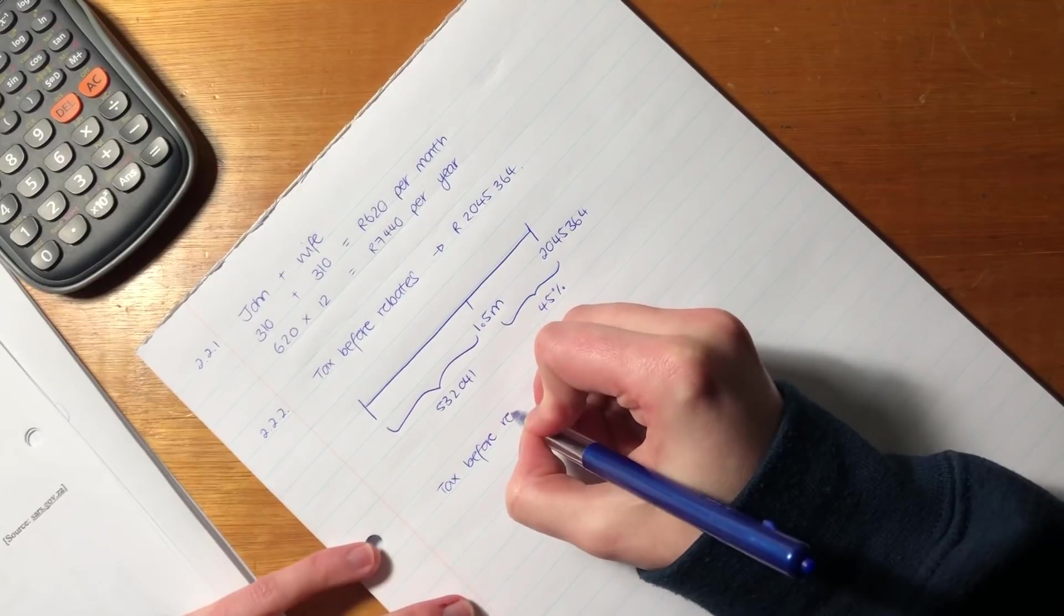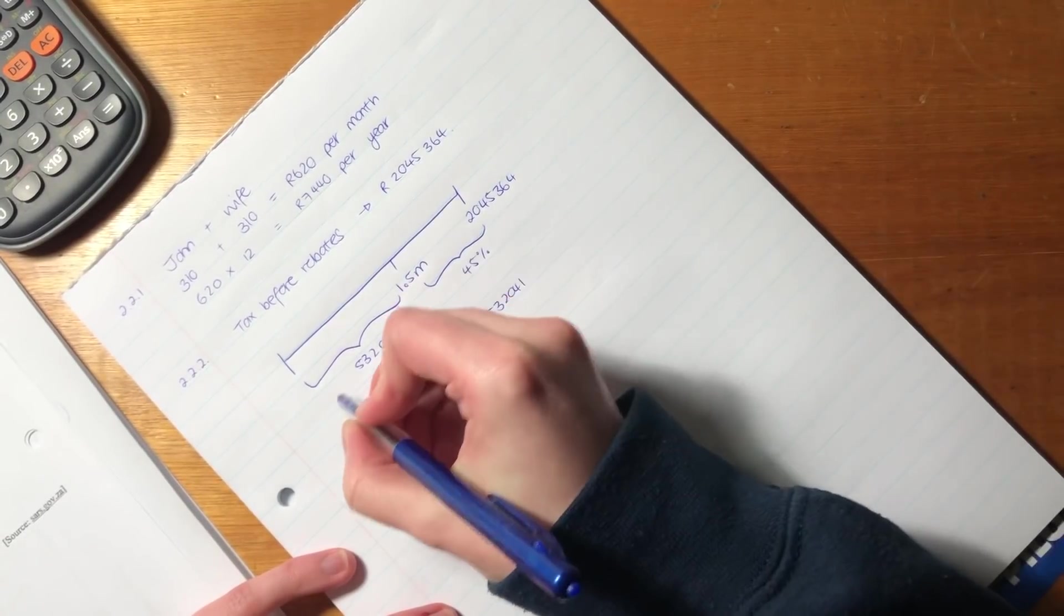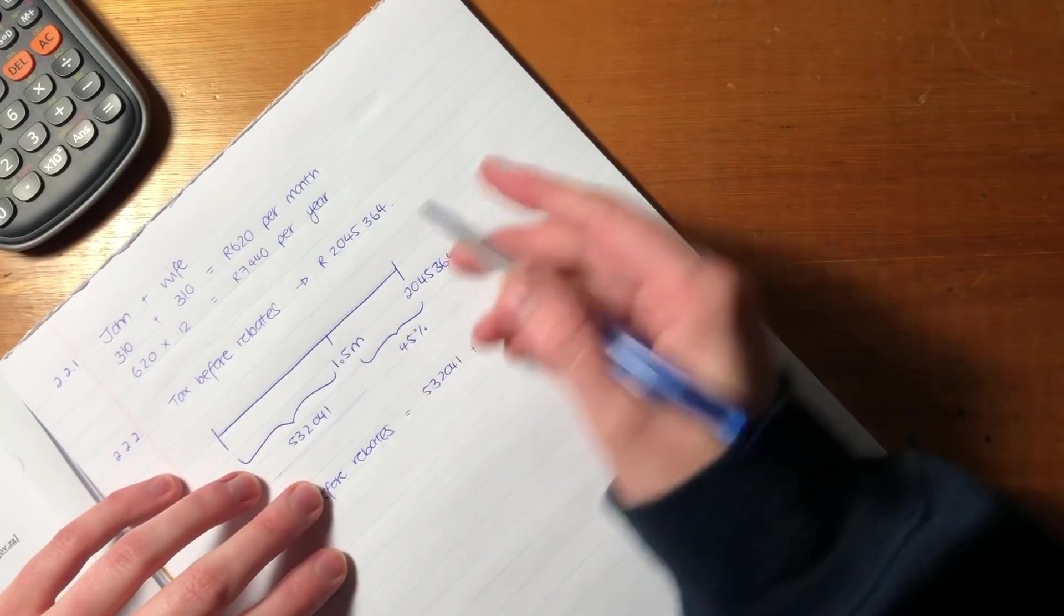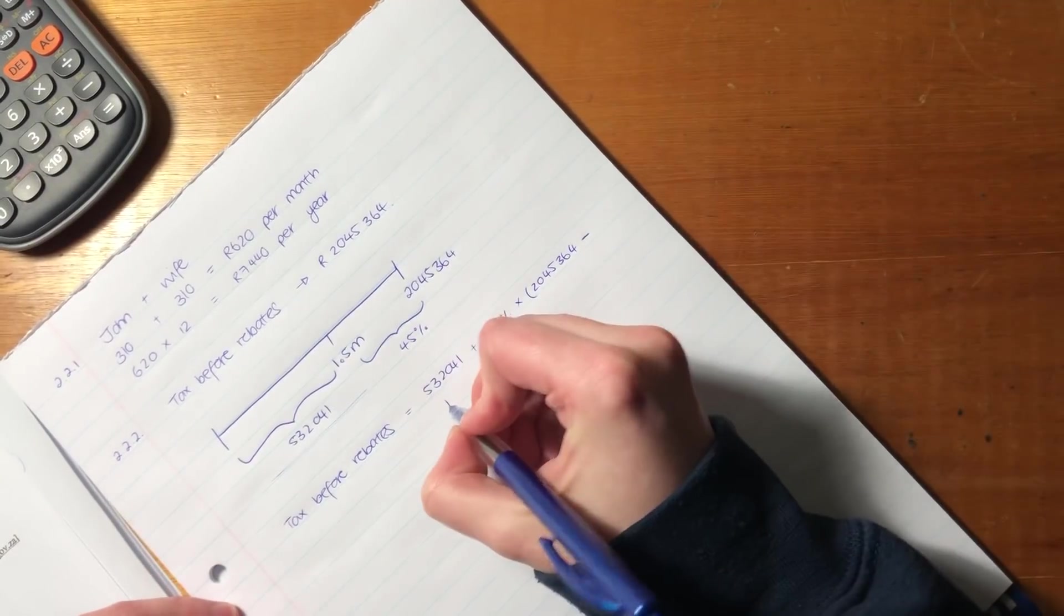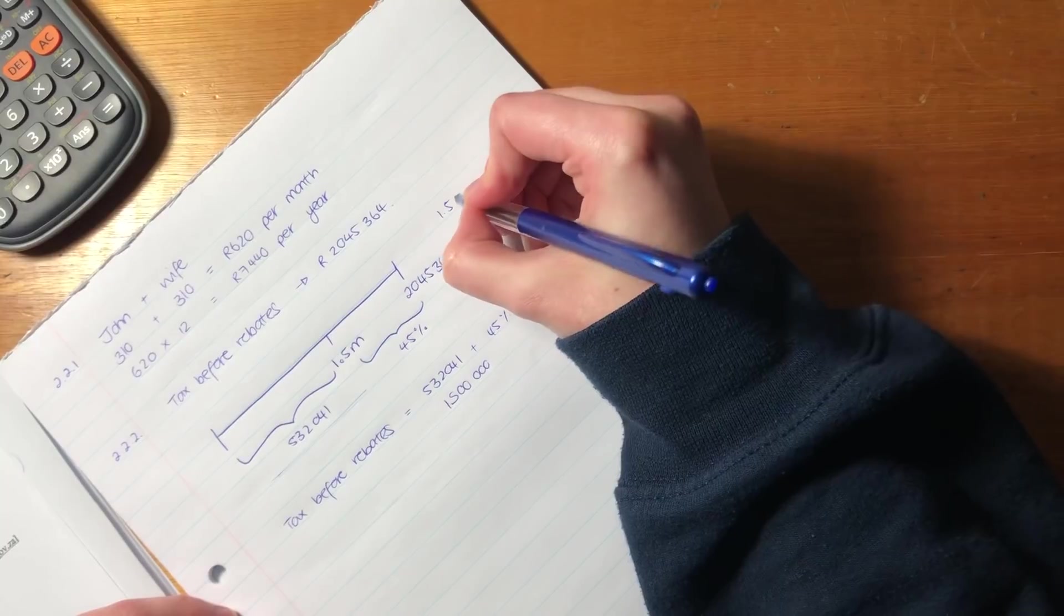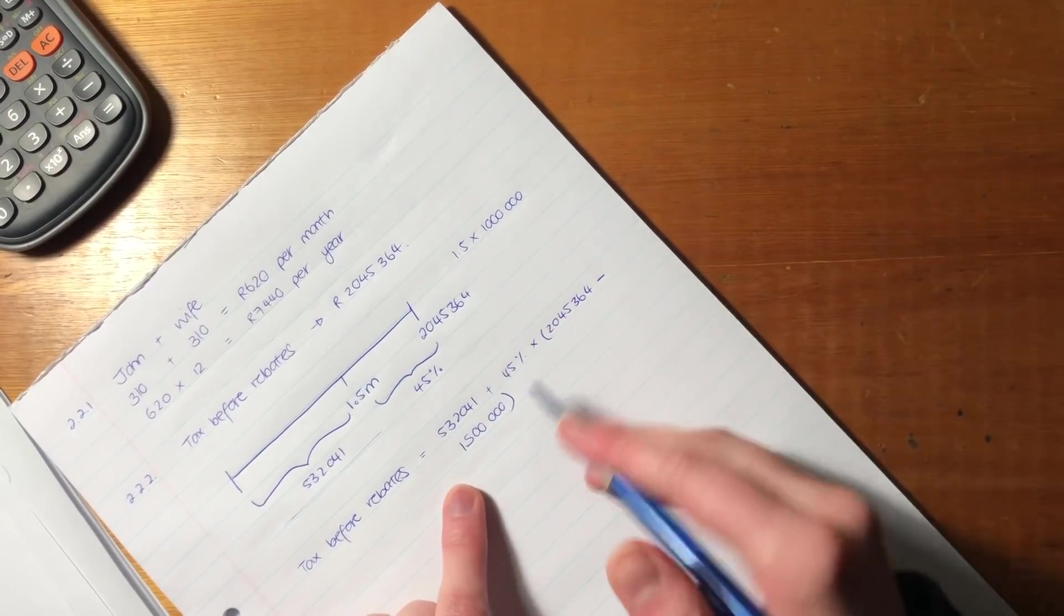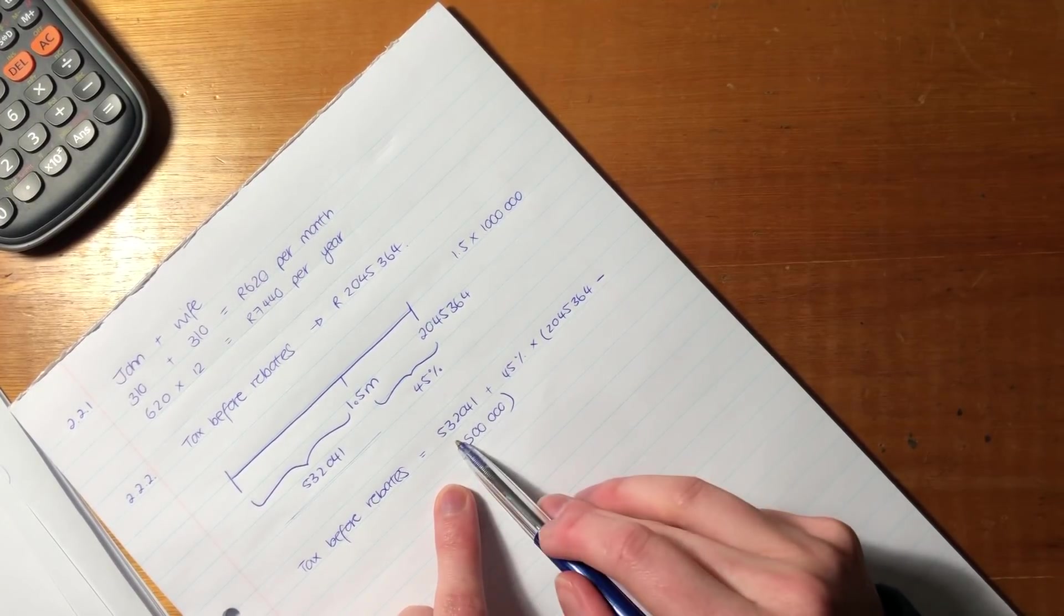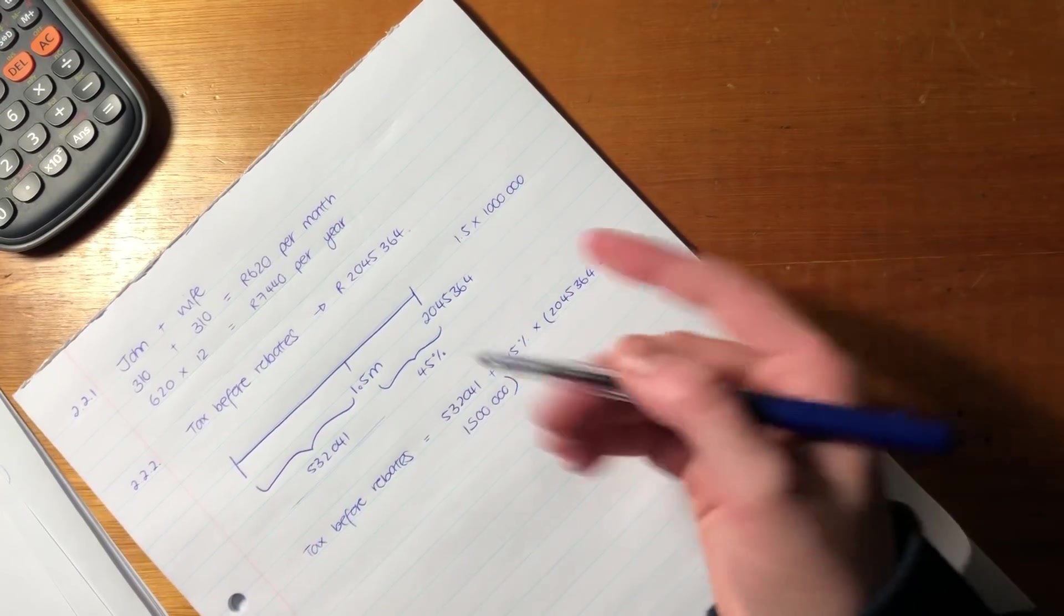Tax before rebates. Okay. So tax before rebates is going to be the 532,041, because that's that amount plus 45% of everything above 1.5 million. So we have to times that by 2,045,364 minus, we have to write it as one and a half million. You have to write it out in total. Remember 1.5 times by a million will help you to get this. Okay. So it's 1.5 million. Why do we subtract the 1.5 million? Because anything below 1.5 million has already been accounted for tax-wise in this amount. So we have to subtract this from that to understand what the 45% applies to.